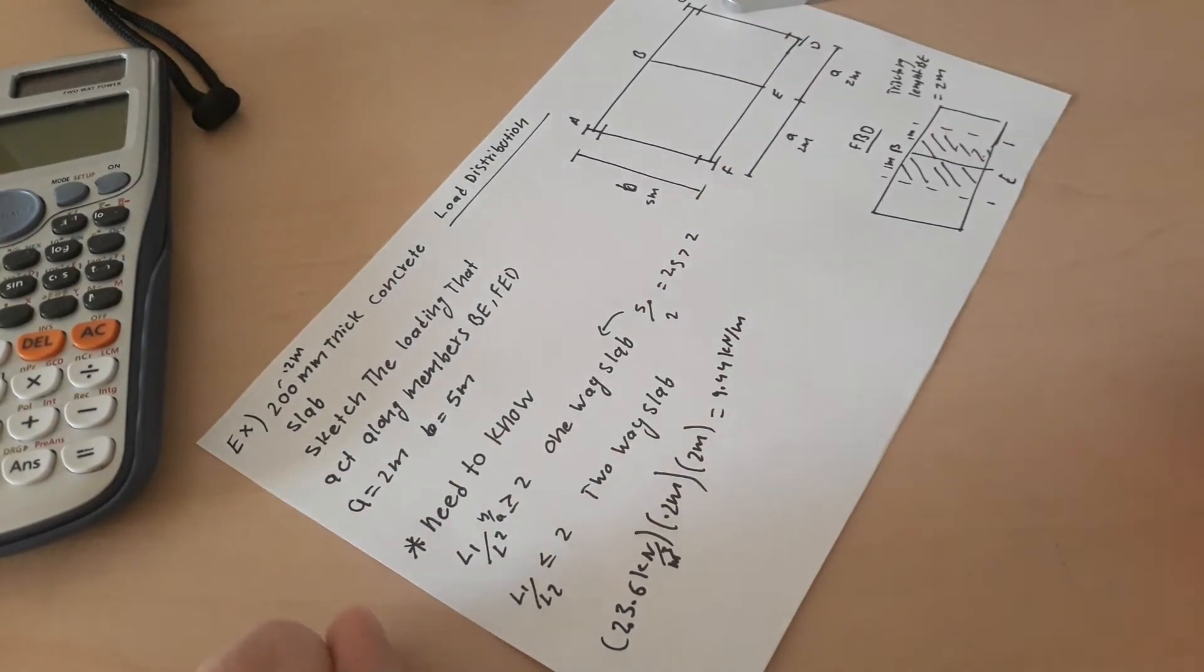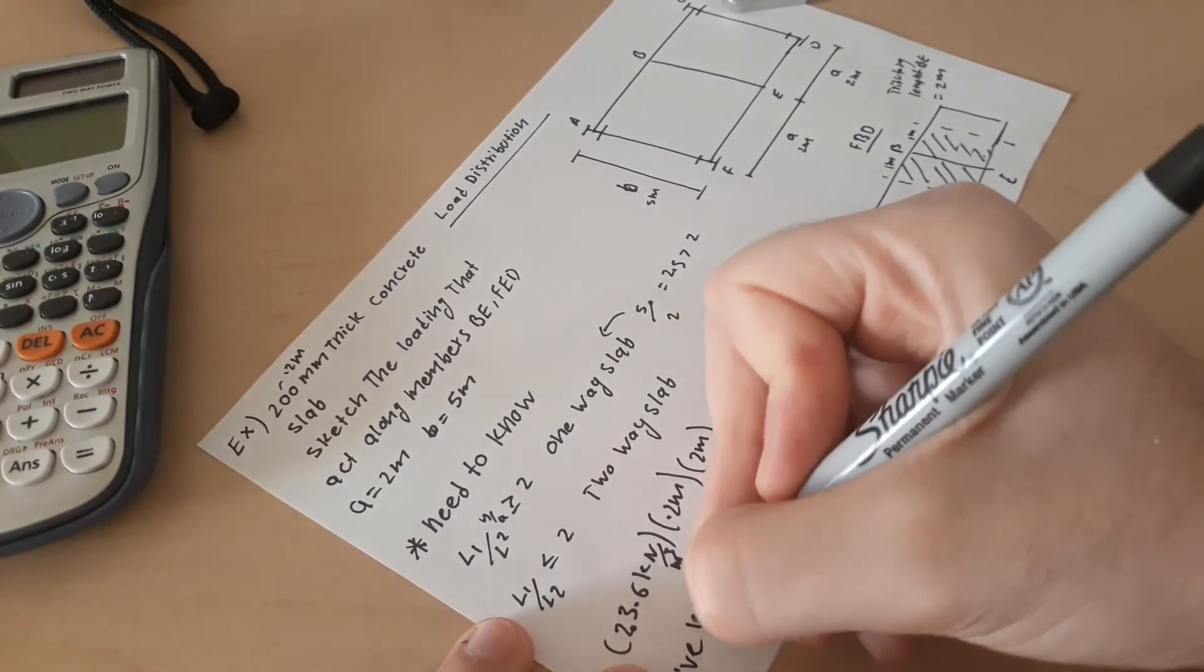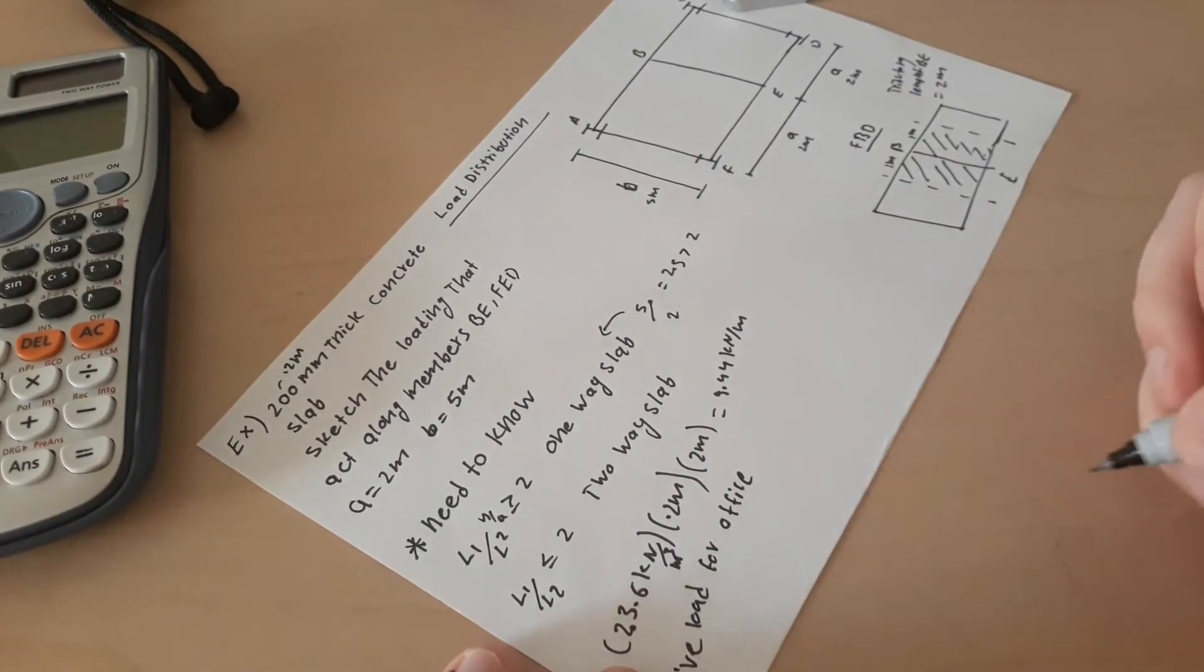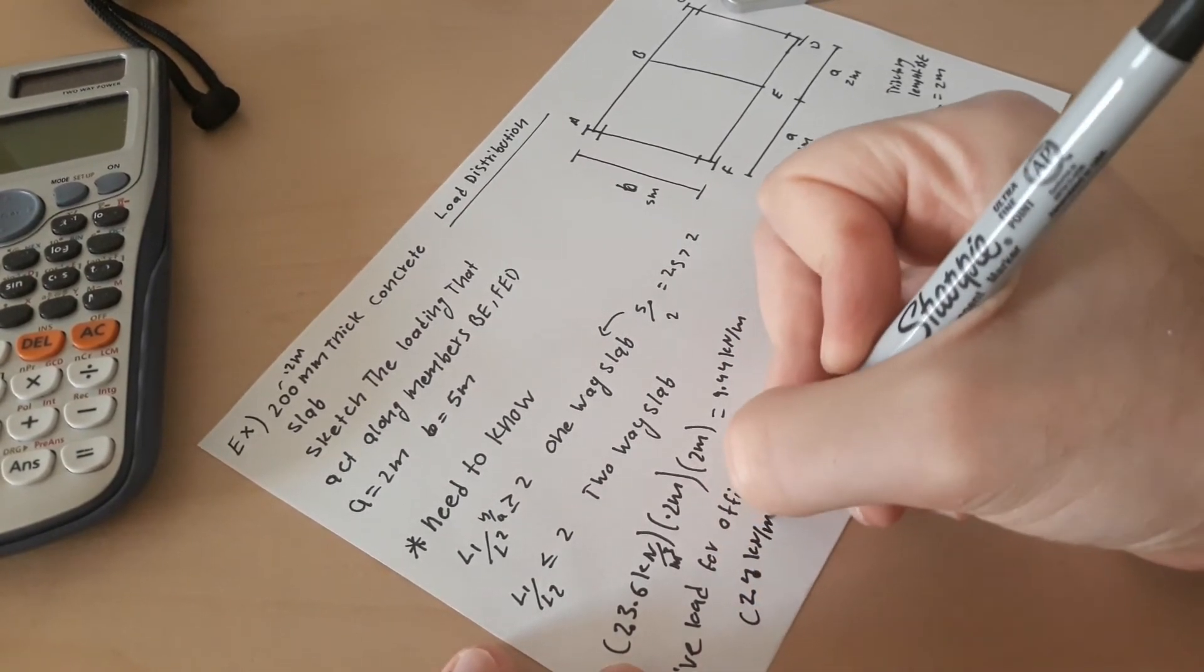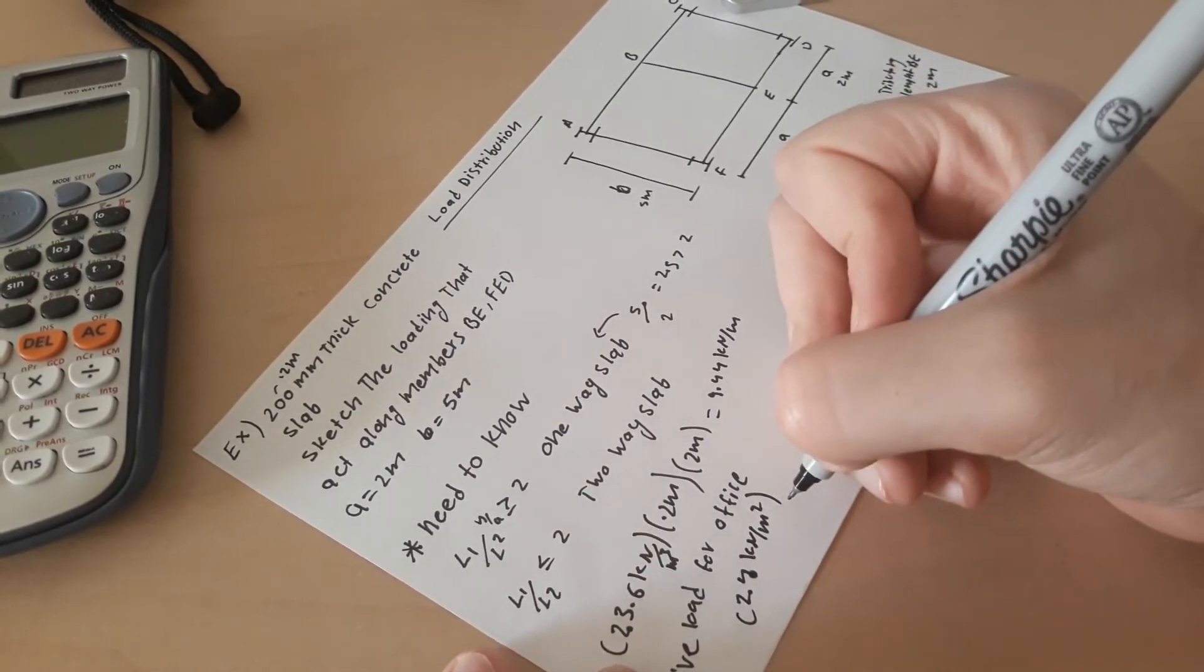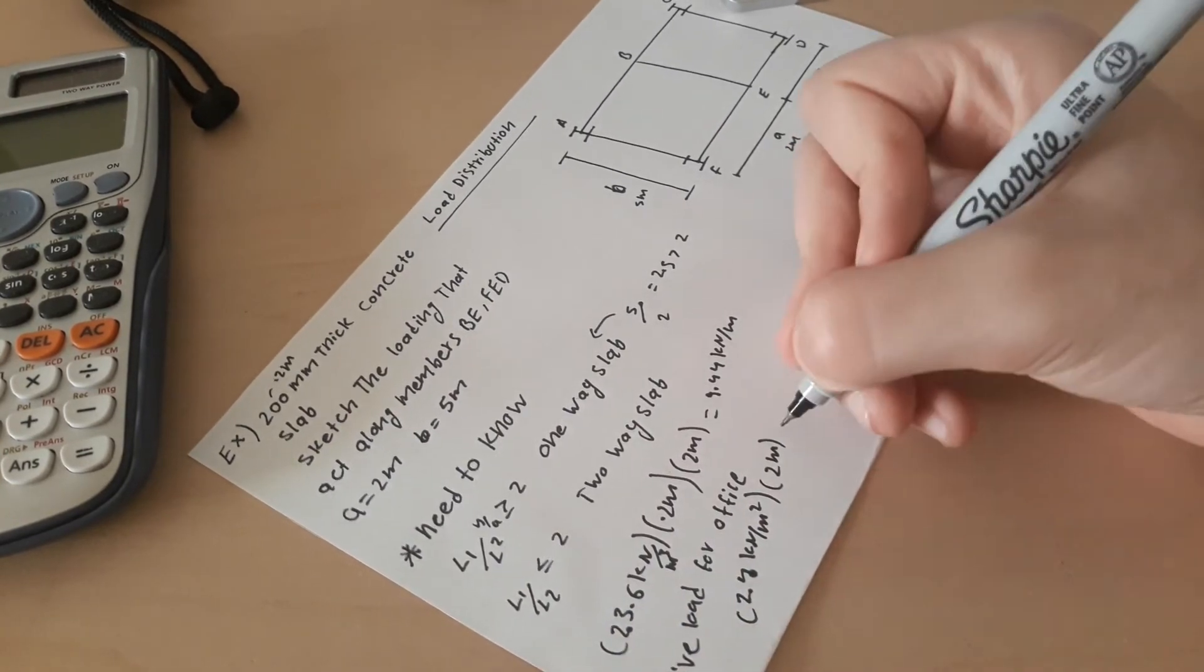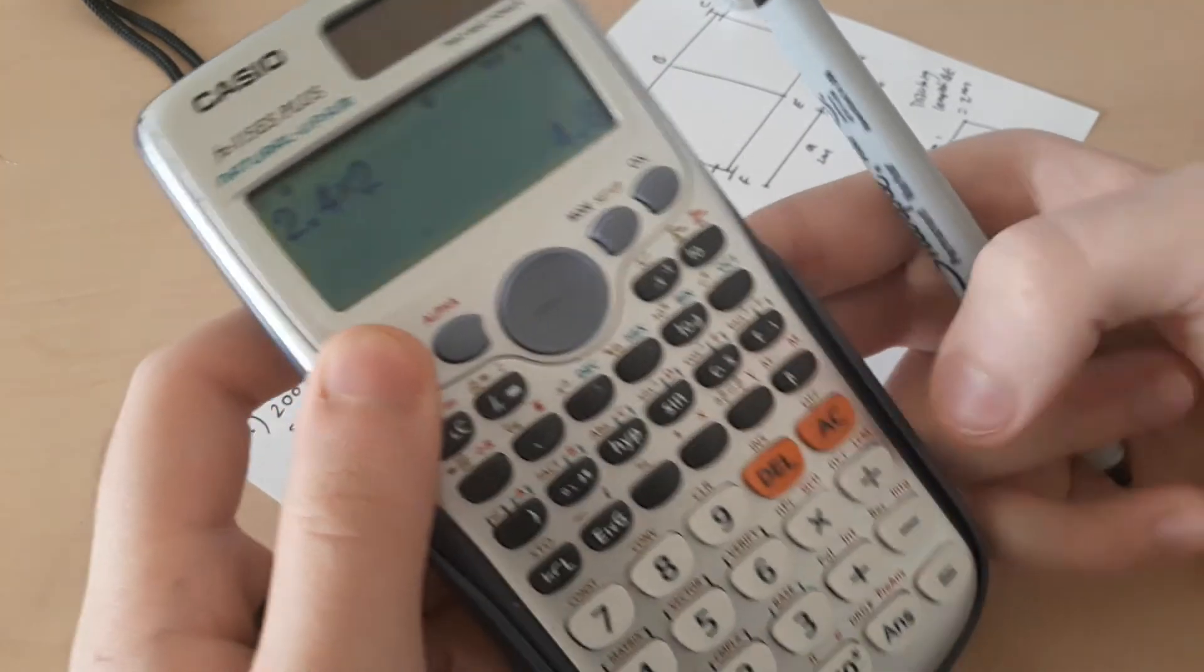Next we need to calculate the live load for office. Then they said this is used for office. From the table we look and we see that for live load for office is 2.4 kilonewton per meter squared. We need to multiply by the tributary length. For live load we don't need to multiply by thickness. So 2.4 times 2 gives us 4.8 kilonewton per meter.